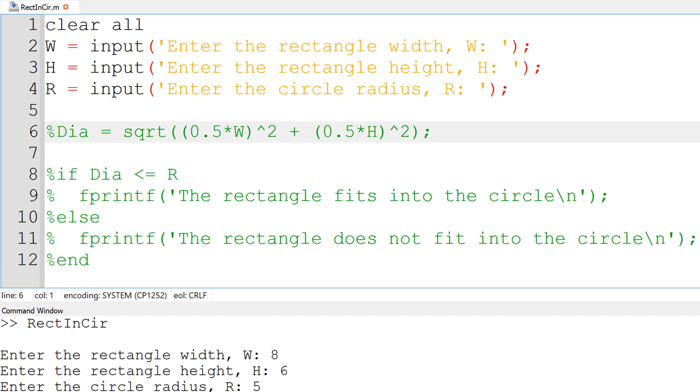Then we need to calculate the half diagonal length of the rectangle using Pythagorean theorem and save it in the variable DIA, which is short for diagonal.